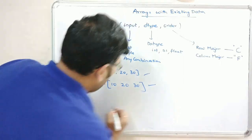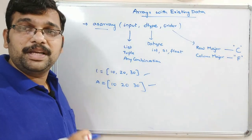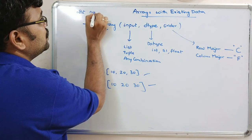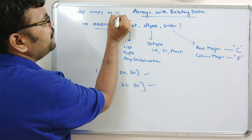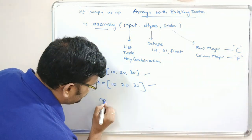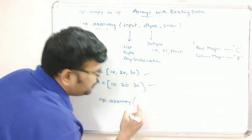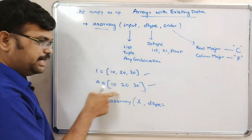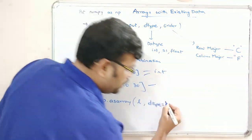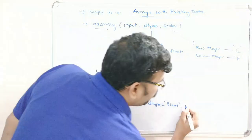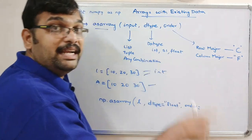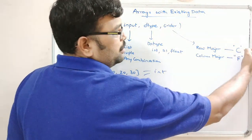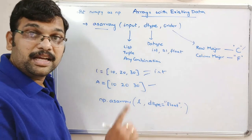All functions should be called with the module name. We can import NumPy with an alias: `import numpy as np`. Then we call `np.asarray(l, dtype=int)`. If we want float instead, we specify `dtype=float`. The `order` argument — either C or F — is optional; by default it's row major order.